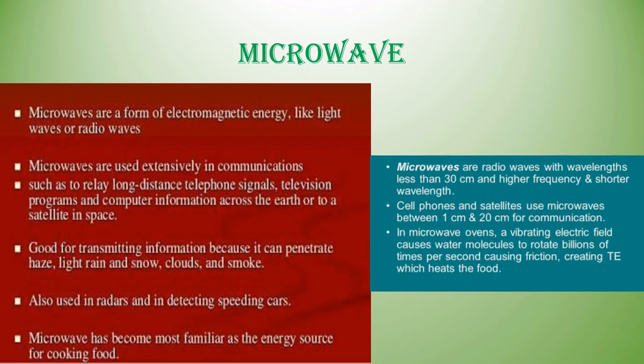Microwaves are radio waves with wavelengths less than 30 centimeters and have higher frequency and shorter wavelength. In a microwave oven, a vibrating electric field causes water molecules to rotate billions of times per second, causing friction and creating thermal energy which heats the food.